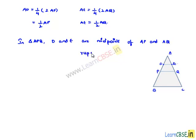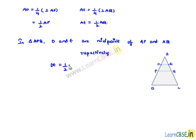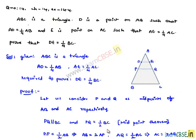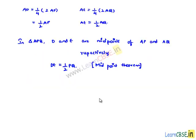So here again by midpoint theorem, we can say that DE will be equal to half times PQ, but we know that PQ is equal to half times BC.